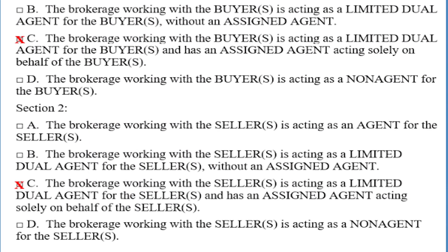Okay, so let me see if I've got this now. If I was personally double-ending a deal, then I'd select B and B because I'm working for both the buyer and the seller without any assigned agents. Yes, I think you see what the problem is now. If you ever need help with which option to select on the representation confirmation section, please let me know.